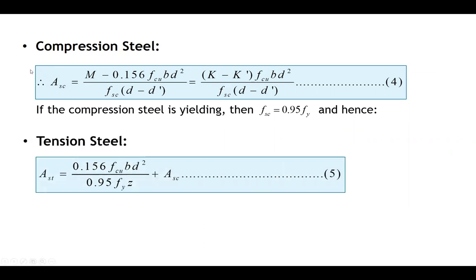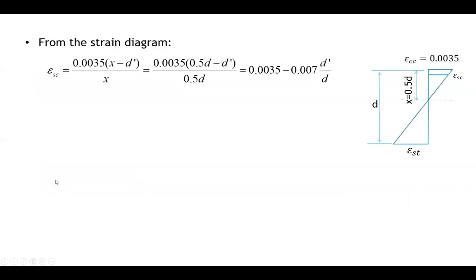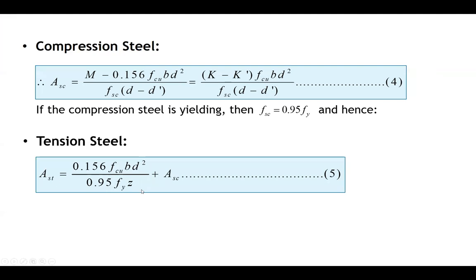Once we get the area of compression steel, we can get the area of tension steel from Equation 5: Ast = 0.156 Fcu·b·d² / (0.95 fy × z) + Asc. Keep in mind that z in this equation is the constant value 0.775d.